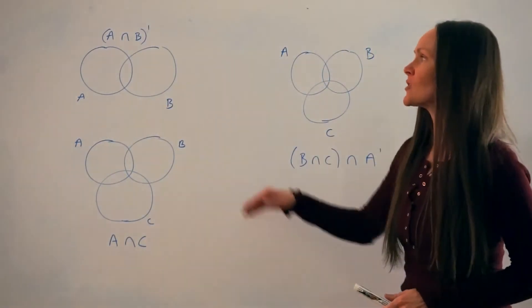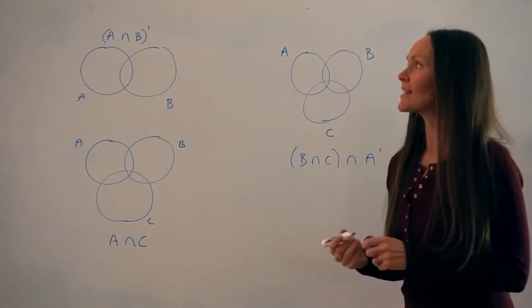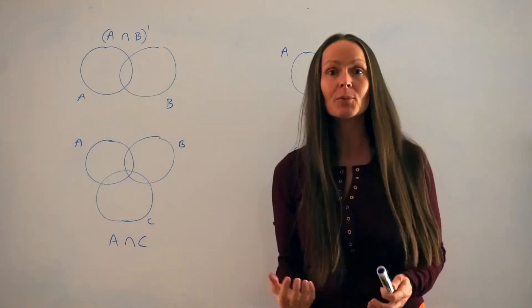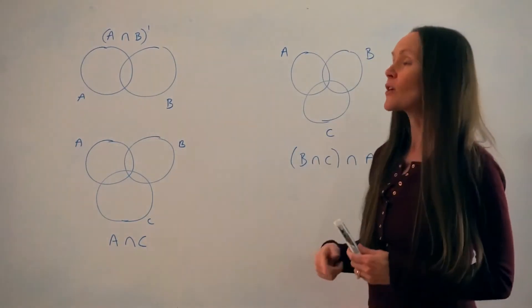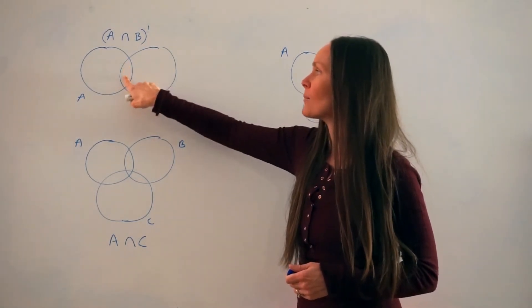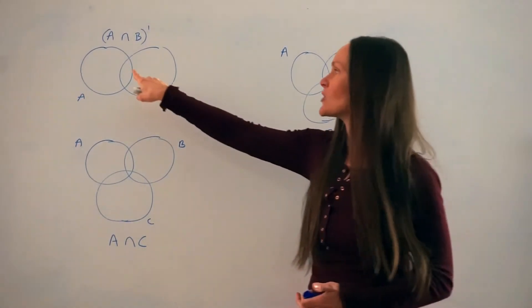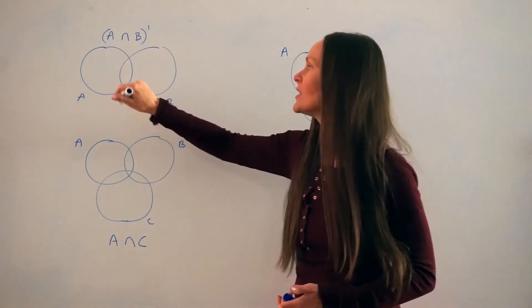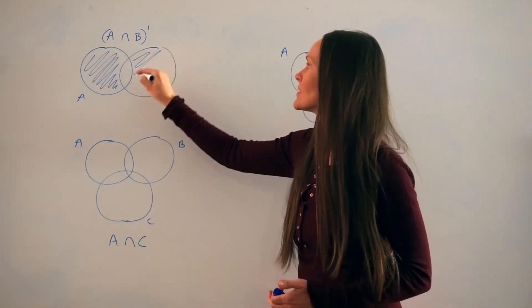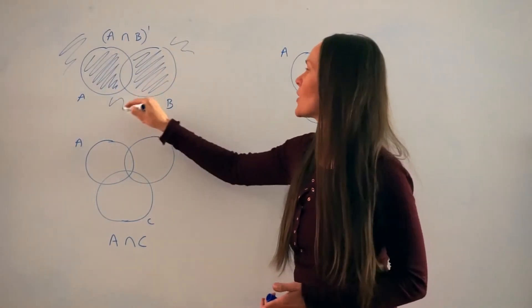In the next example, we have to shade the complement of A intersection B. When it looks like this, ignore the little dash outside and imagine what it would look like if you shaded A intersection B — that's like the very first example, the overlap of the two circles. But the complement is everything outside of that. So shading everything outside the overlapping part means you shade everything in circle A up to but not including the overlap, everything in circle B up to but not including the overlap, and then everything outside the two circles.